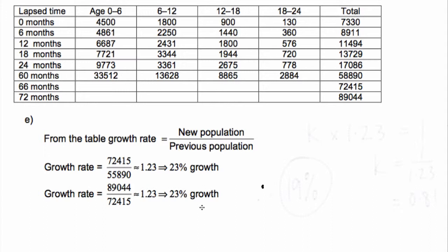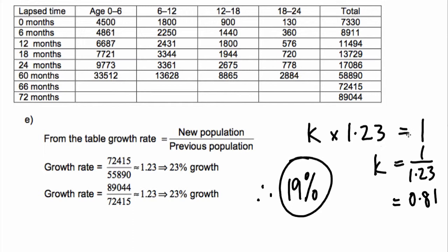This question doesn't ask this, but if we wanted to know the cull rate: with 23% growth, something times 1.23 equals 1, so to reverse it we multiply by 1 ÷ 1.23 = 0.81, or 81%. That's a 19% decrease, meaning each six-month period we would have to cull 19% of the bats in order to contain this 23% population growth.